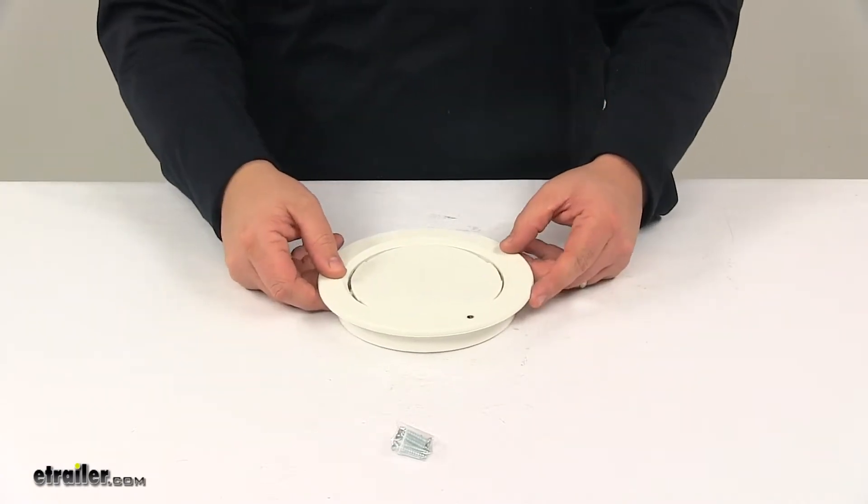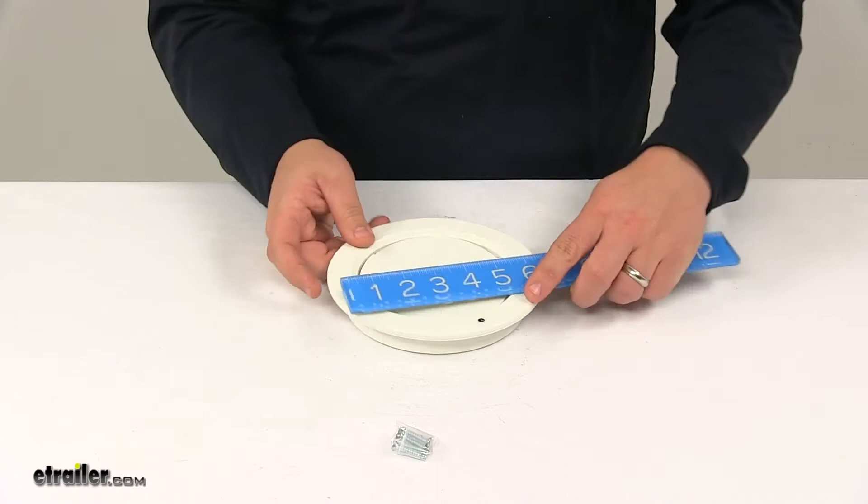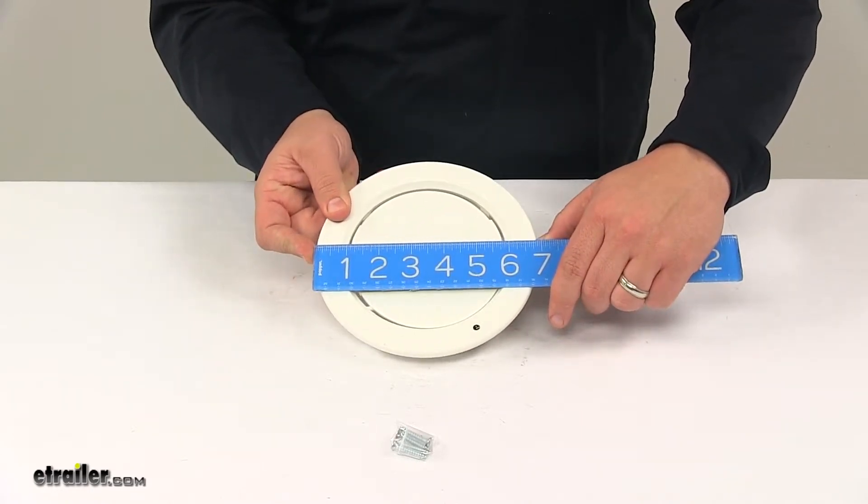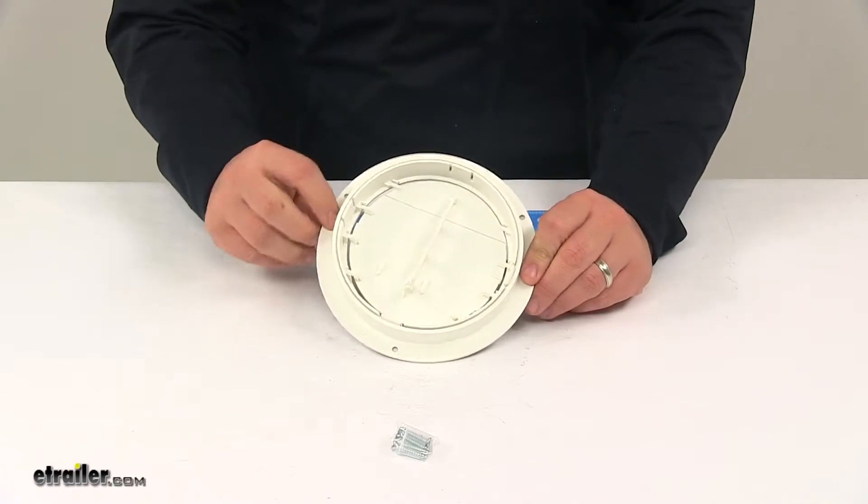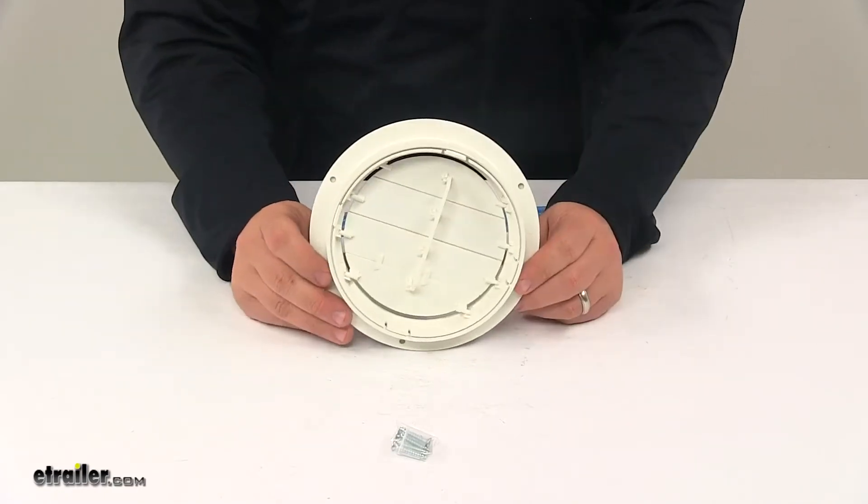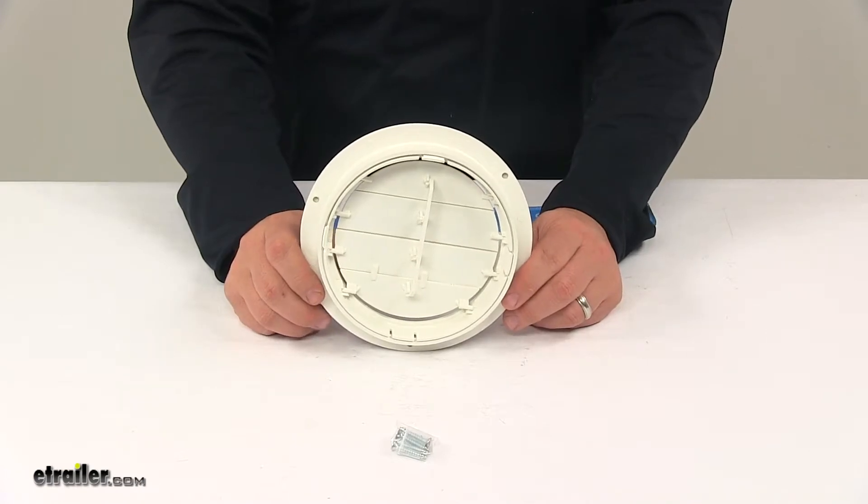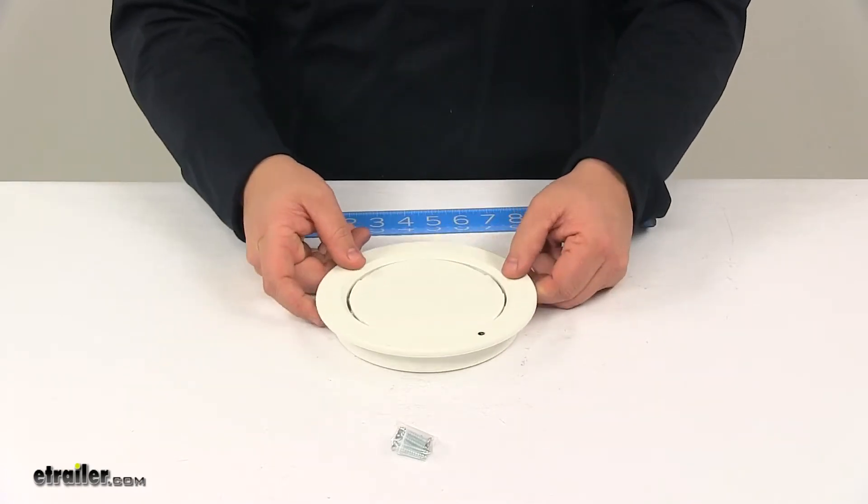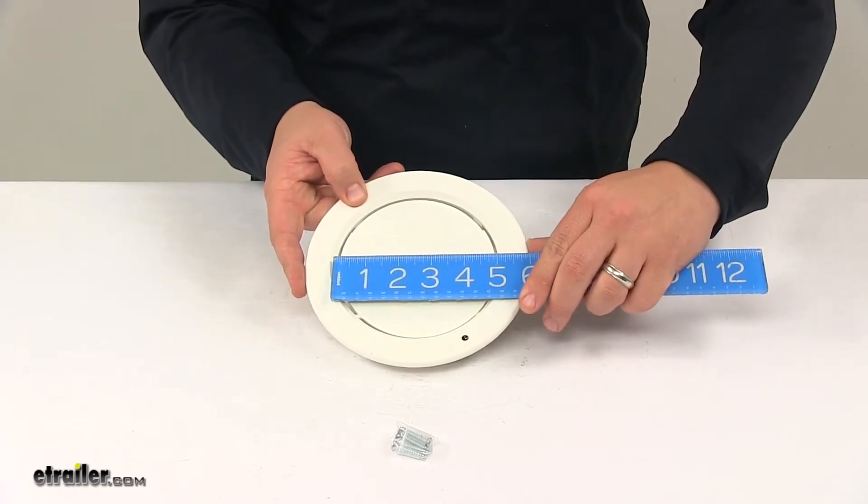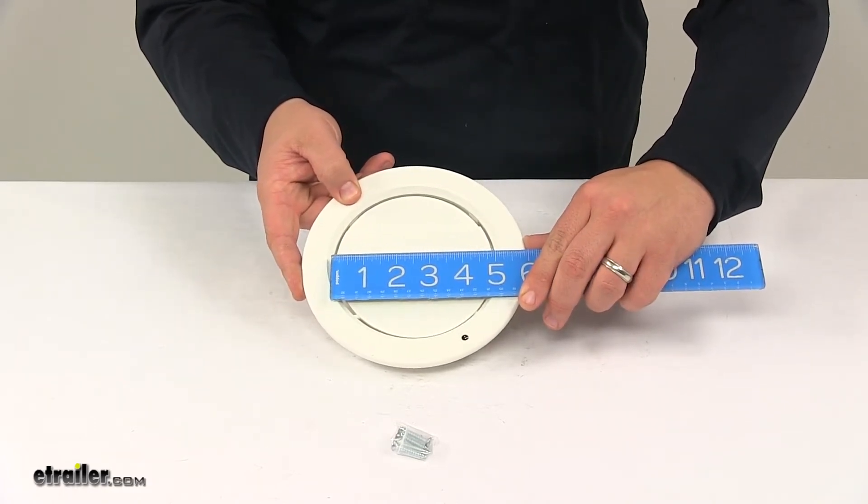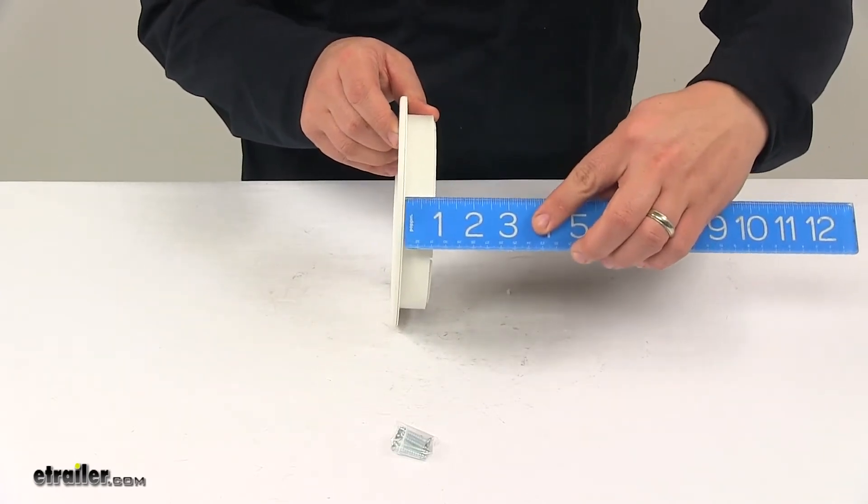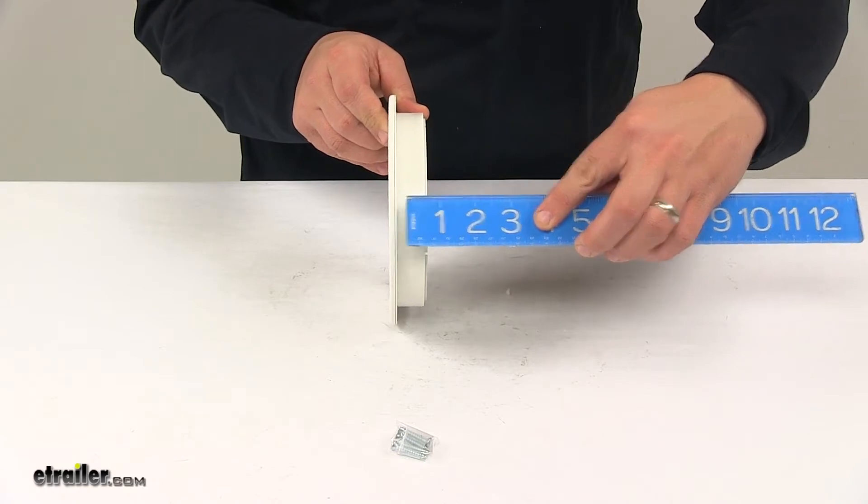A few measurements to go over real quick: the overall diameter edge to edge is about 6 and 7/8 inches. The mount holes are separated on center by 5 and 13/16 of an inch. The vent opening—this portion right here—measures pretty close to 5 inches, and the collar extension is about 7/8 of an inch.